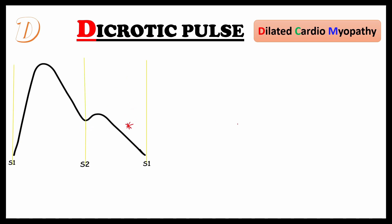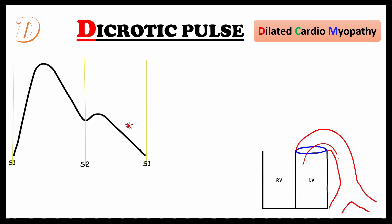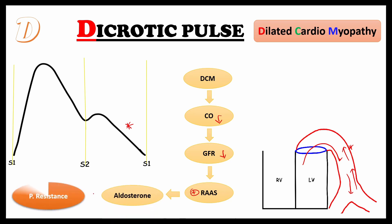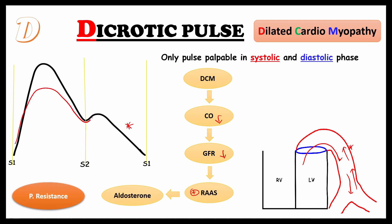Next comes D — dicrotic pulse, which happens in dilated cardiomyopathy. When blood goes out from the aorta, it hits the artery wall and tries to return back into the heart, creating a reflected wave. The reflected wave is directly proportional to peripheral resistance. In dilated cardiomyopathy, cardiac output decreases, GFR decreases, so the renin-angiotensin mechanism is activated, producing aldosterone, which increases peripheral resistance.